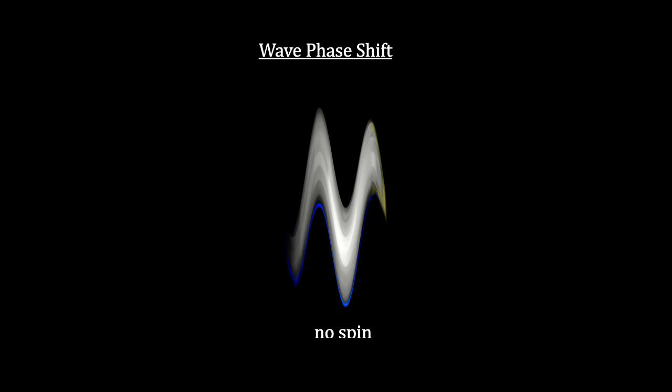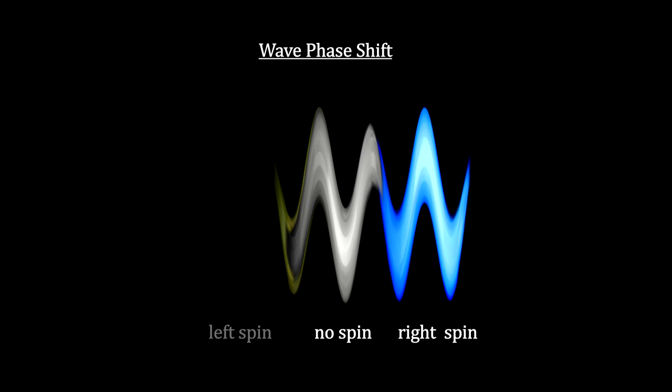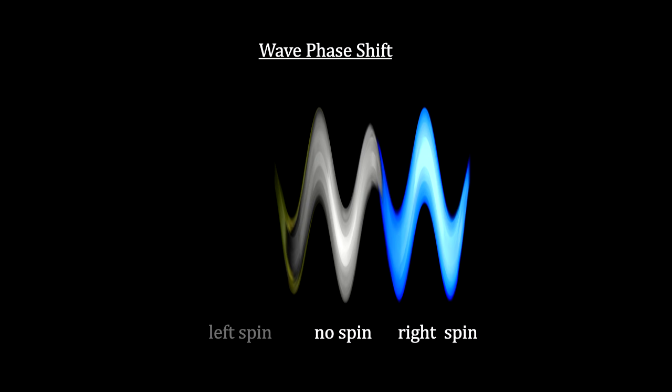It might seem strange, a particle changing its spin on the fly. But if you recall that particles travel as waves, and spin can be viewed as a phase shift in the wave, it's not too hard to visualize.